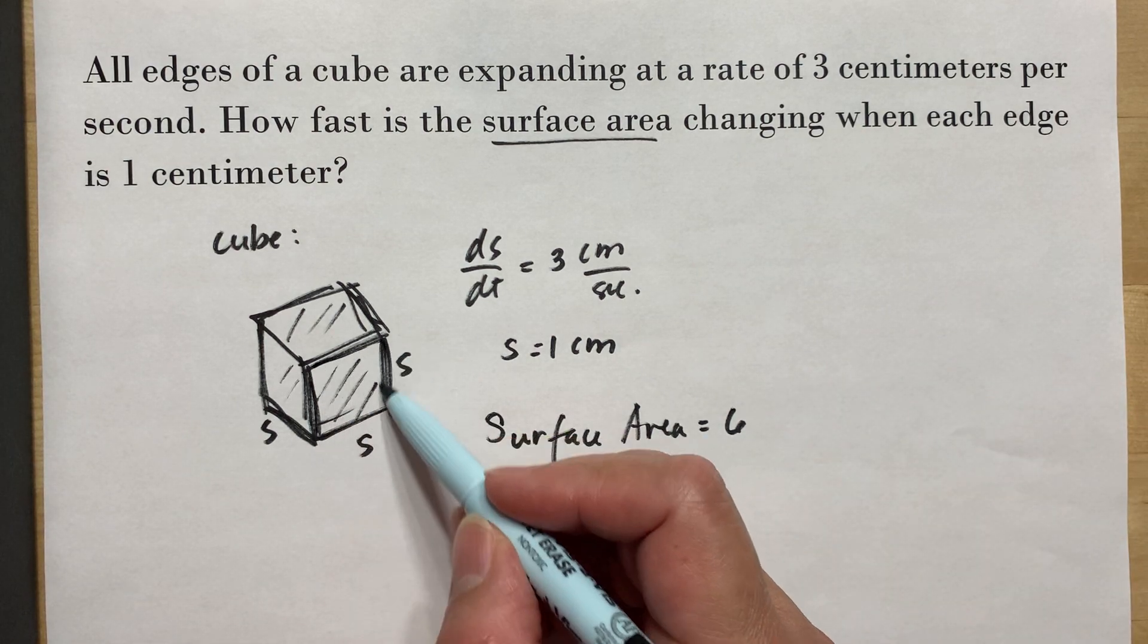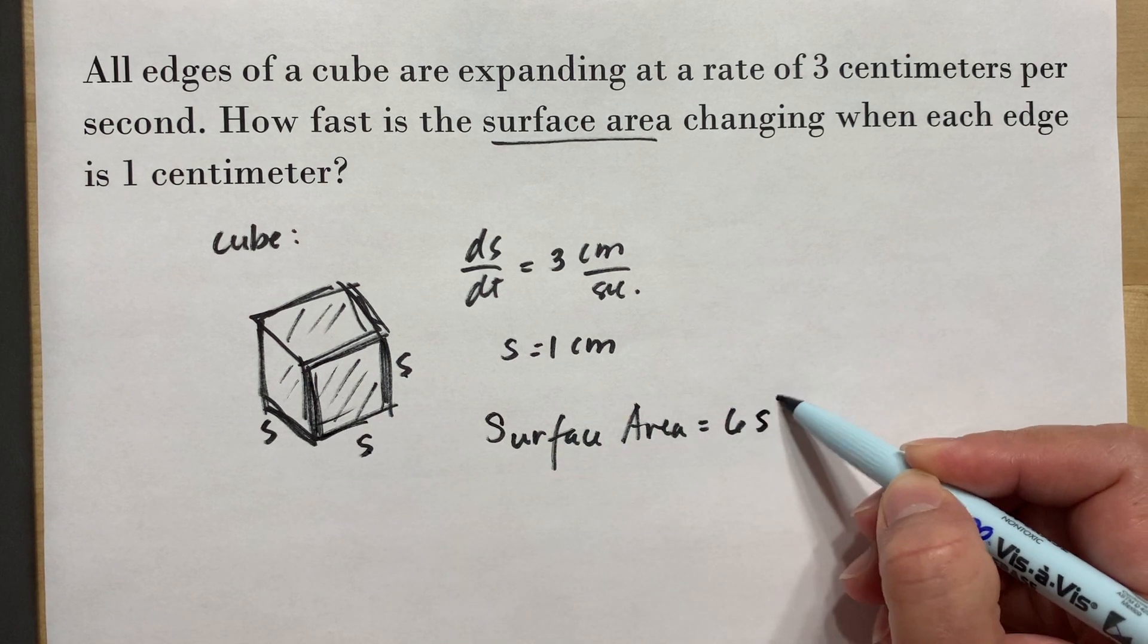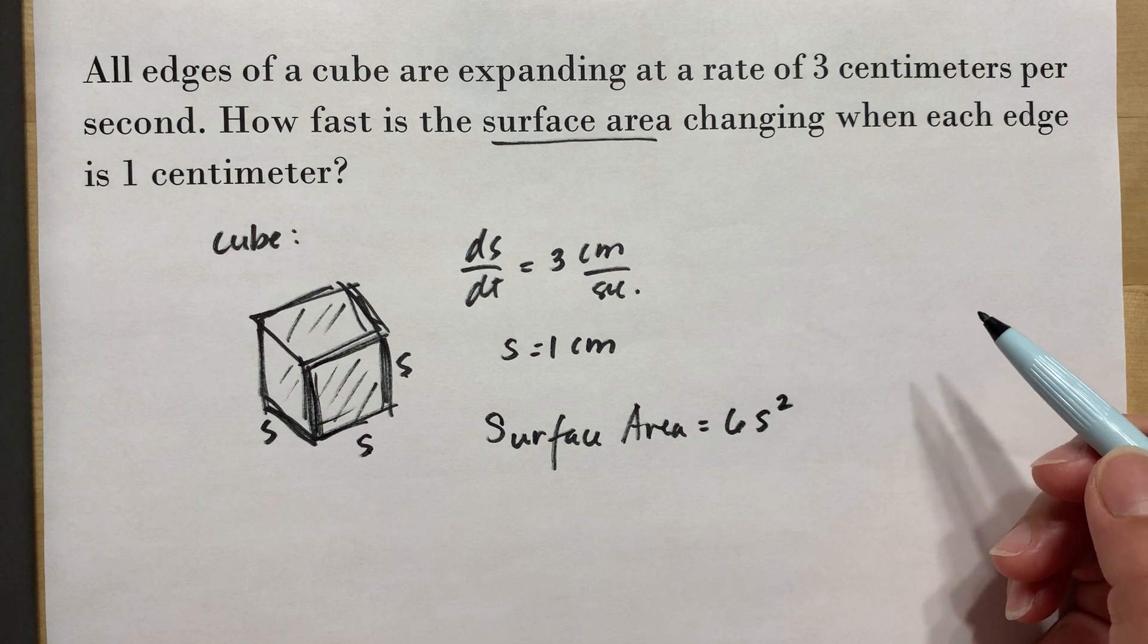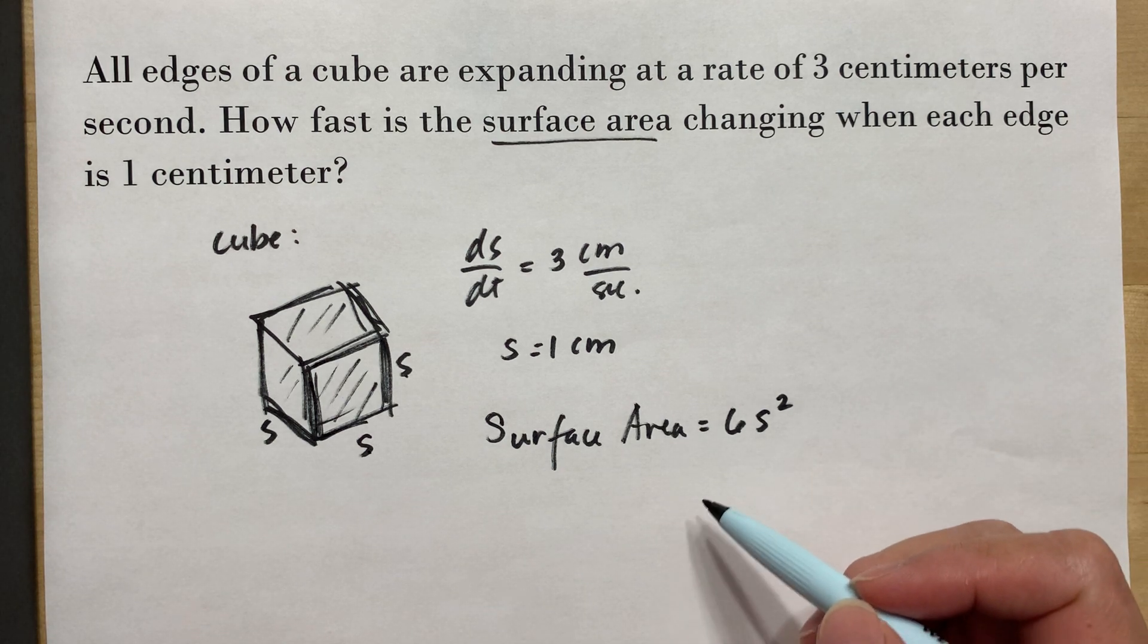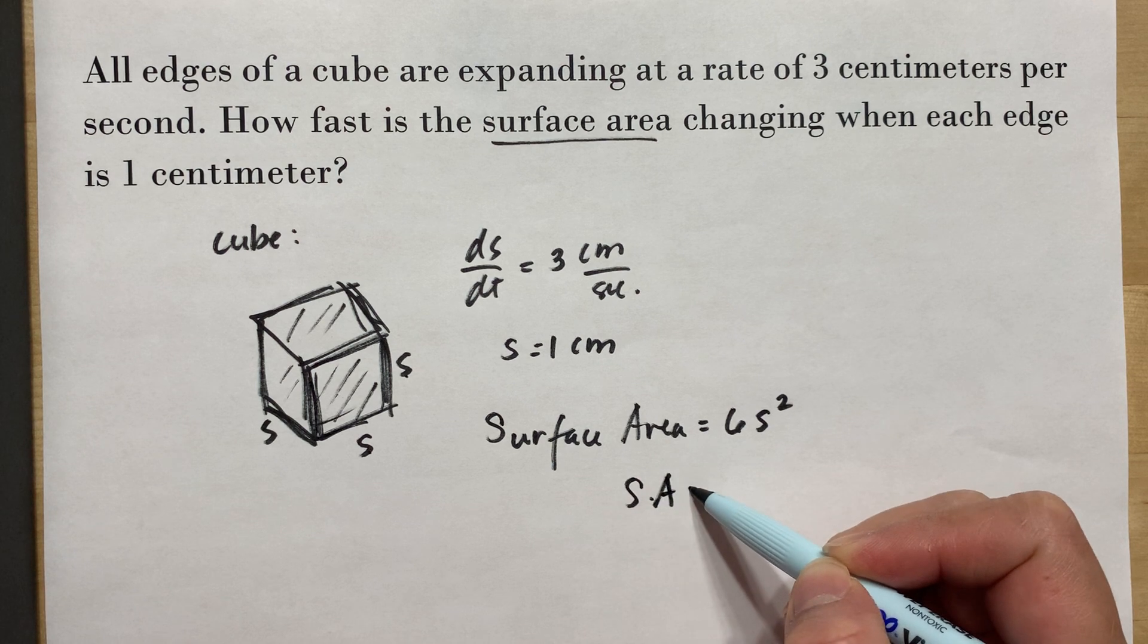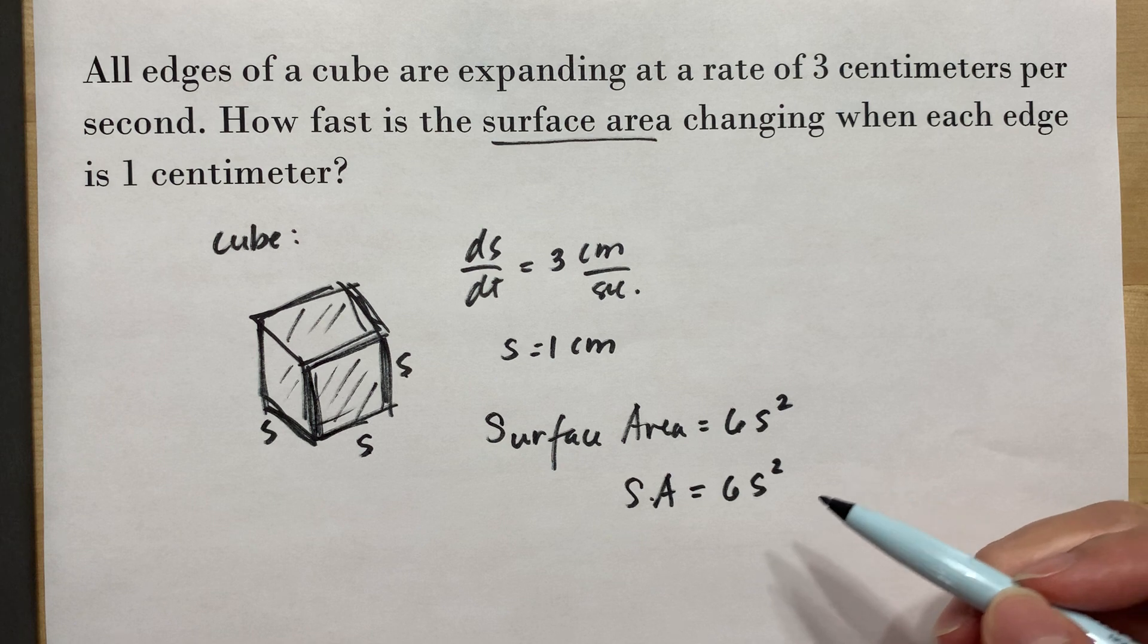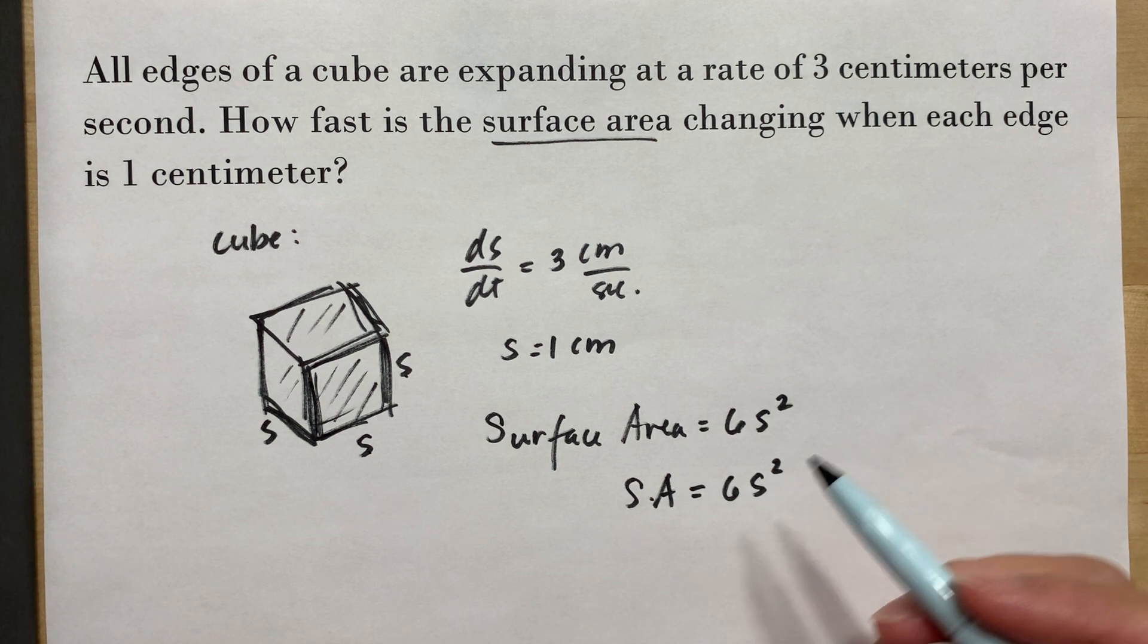The surface area of your cube is 6 and they're all the same. The area of one side is S multiplied by S, so this will be S to the second power. This is your surface area is equal to 6 times the square of the side.